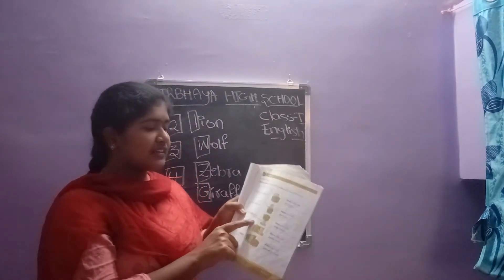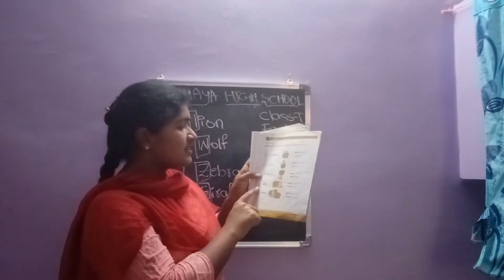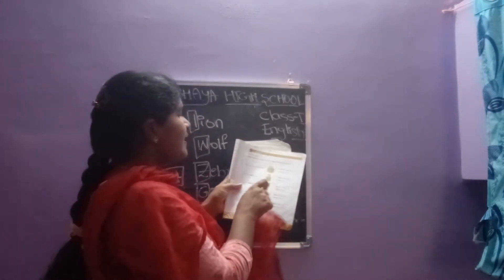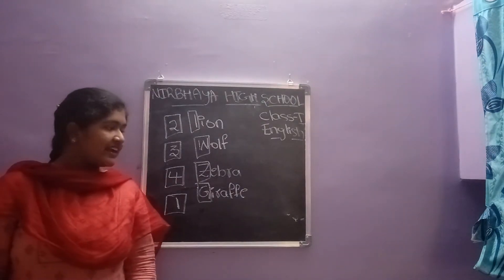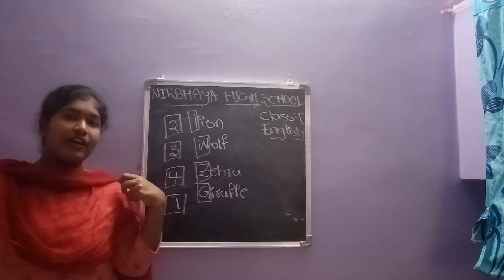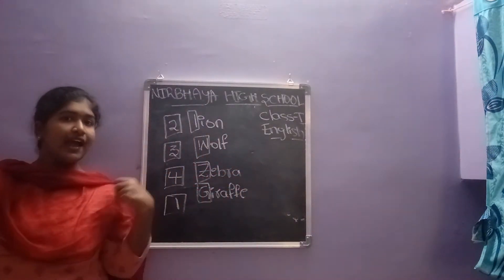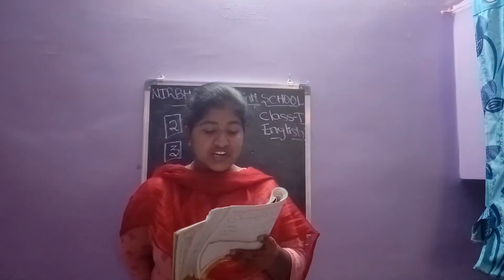Next word: the cat is under the box. Where is the cat? The cat is under the box. So 'under' is a position word. Next: now the cat is beside the box. I am standing beside the blackboard — now beside the blackboard. So beside, in front of, on, and under — these are position words.